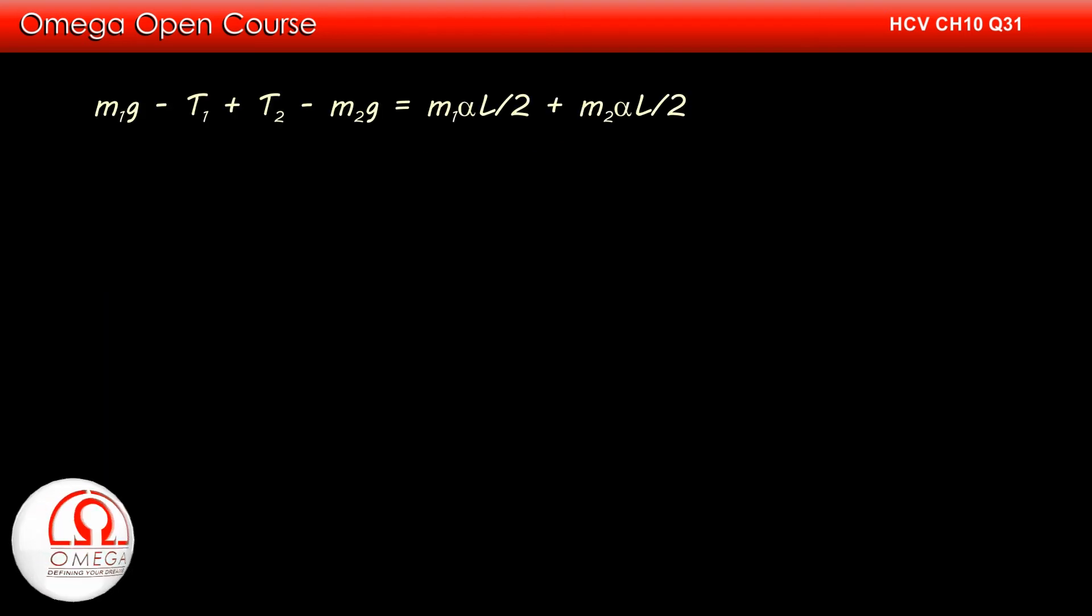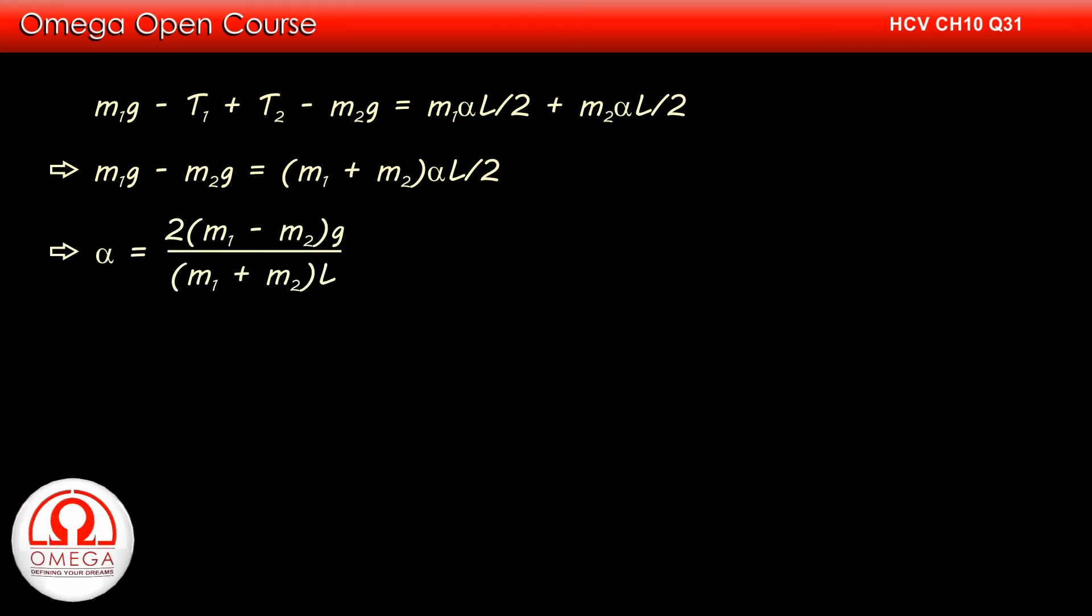Adding equations 1 and 2, we get m1g minus t1 plus t2 minus m2g equals m1 alpha l by 2 plus m2 alpha l by 2. But t1 and t2 are equal. Therefore, the equation becomes m1g minus m2g equals m1 plus m2 times alpha l by 2. Simplifying, we get alpha equals 2 times m1 minus m2 times g divided by m1 plus m2 times l.